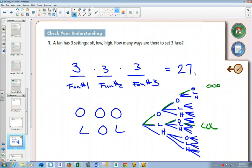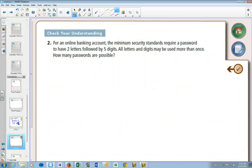So for this one, you have security standards. You have a password that's two letters followed by five digits, and you could pick anything you'd like. All letters and digits may be used more than once, so there's no restrictions on that. How many passwords are possible? Well, to think about how many spaces we need or how many decisions, you have to do two letters followed by five digits, so you have to make seven decisions here.